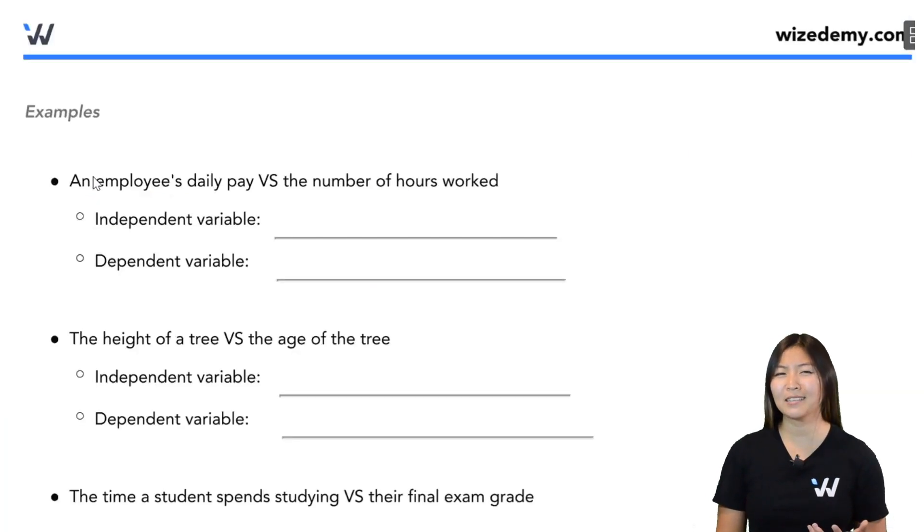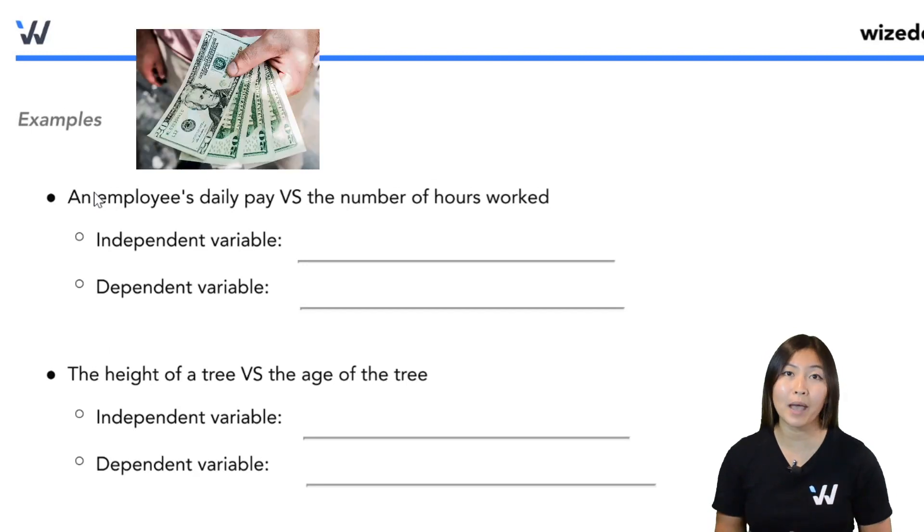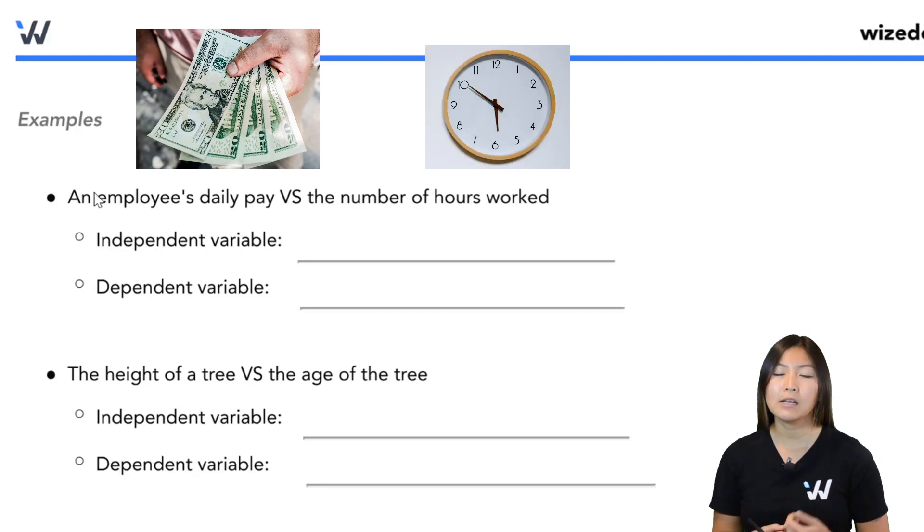So let's take a look at an example here, because I know this can be a little confusing. So our first example, you have the employee's daily pay. So how much that pay they get to take home versus the number of hours they worked. So let me ask you this, does the pay depend on the number of hours they work? Or does the number of hours they work depend on how much they get paid?